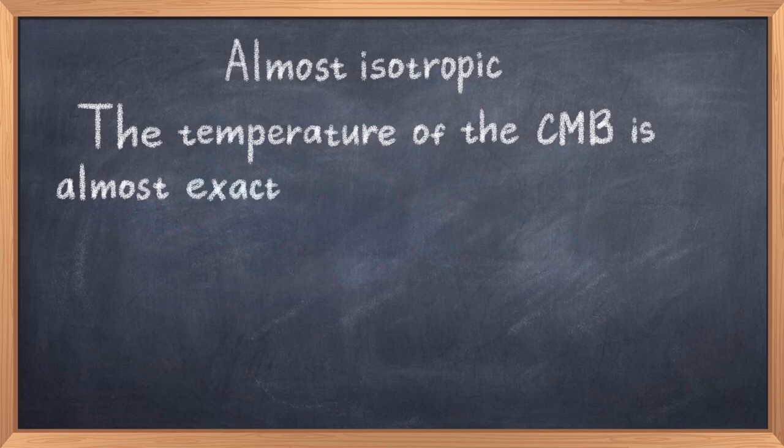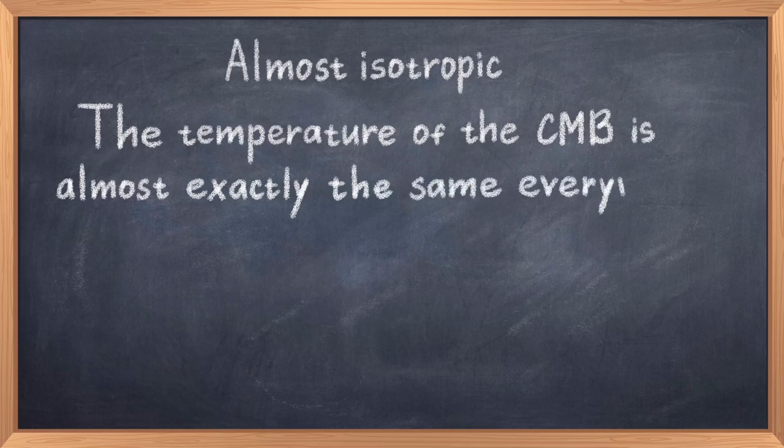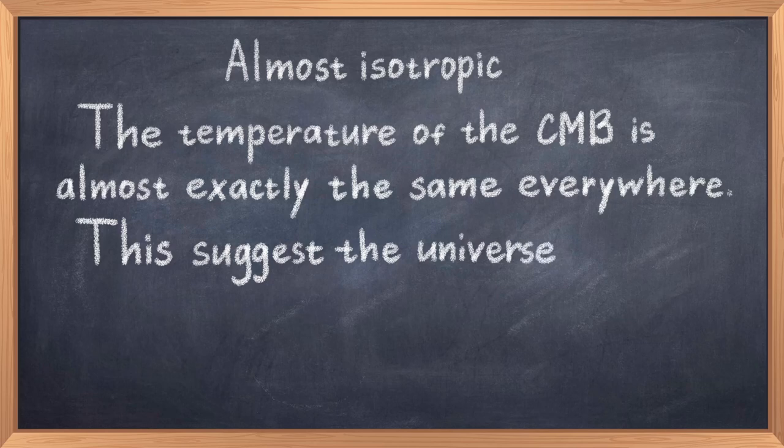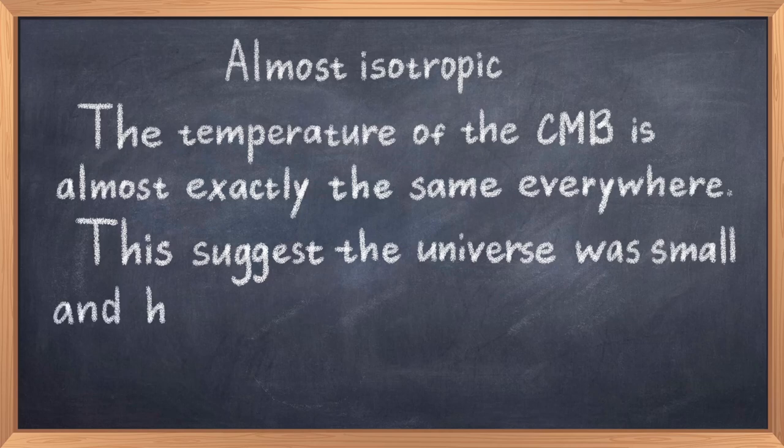While the CMB is very uniform or isotropic, it is not perfectly isotropic. If you look really closely, then some parts are ever so slightly hotter and other parts are colder. This is what is usually highlighted with the colors. These small fluctuations match the ones one would expect from quantum fluctuations when the universe was rather tiny. While the fact that the CMB is almost completely isotropic is very interesting on its own, it turns out that studying these small fluctuations in some ways are even more interesting.